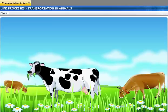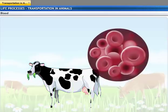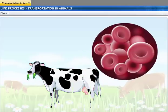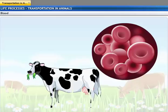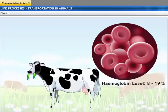The normal range of hemoglobin is not the same for all animals. In cattle, for example, the range of hemoglobin is between 8 and 19 percent, which is quite different from that of human beings.